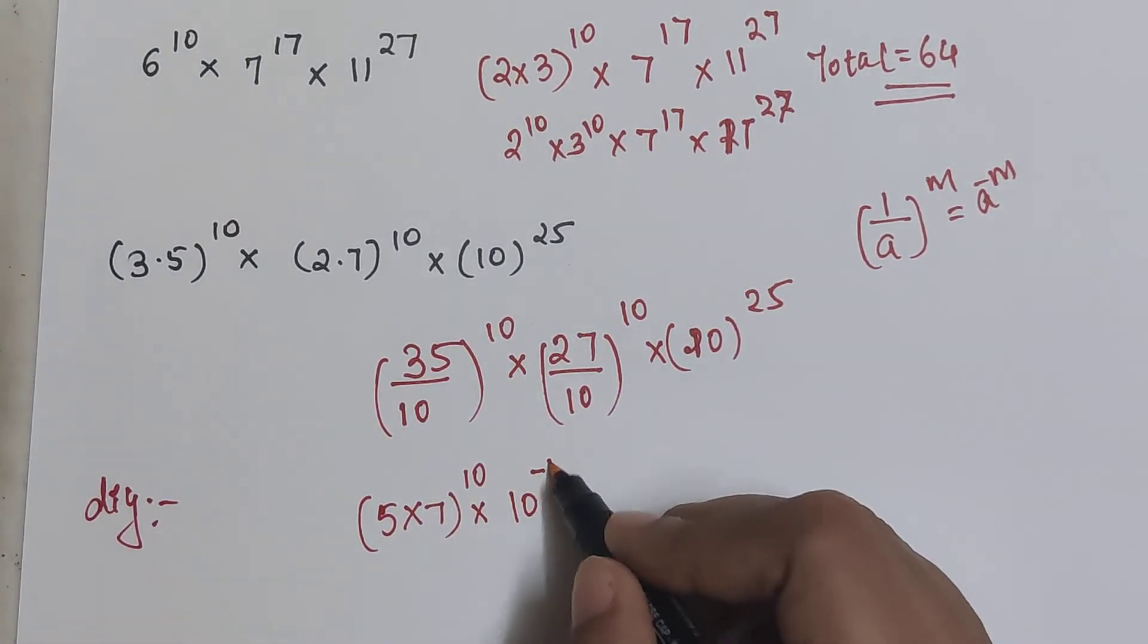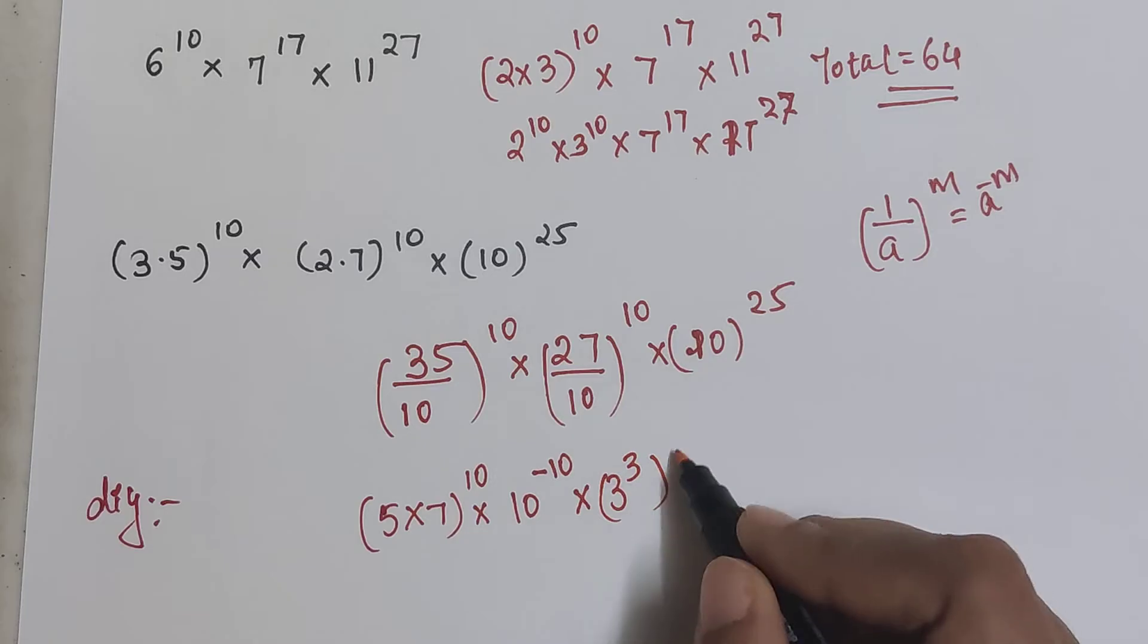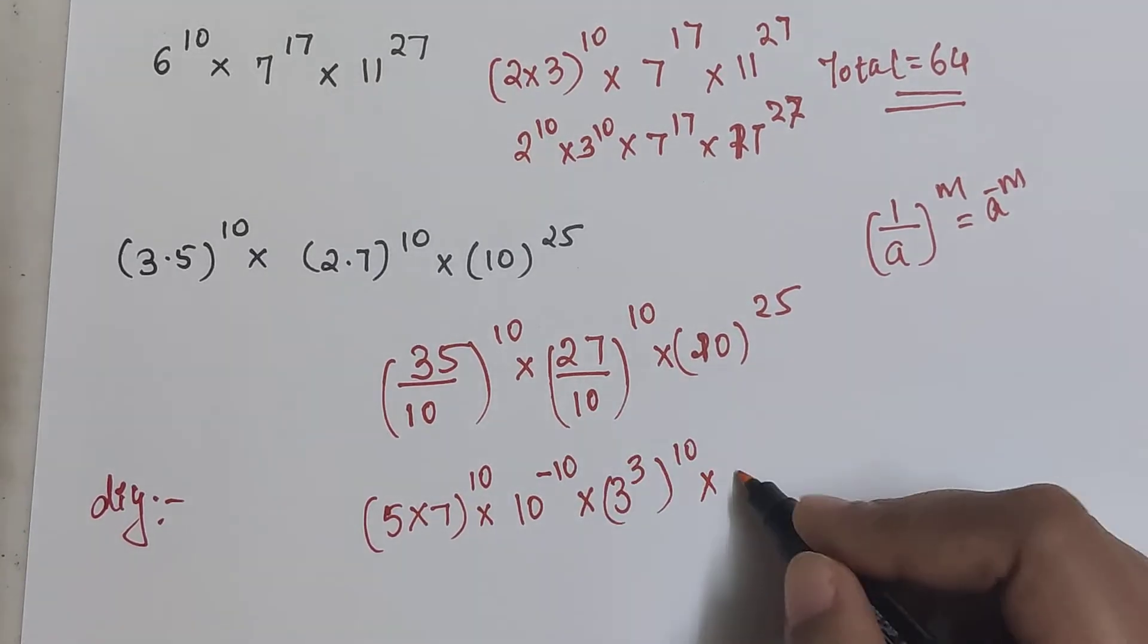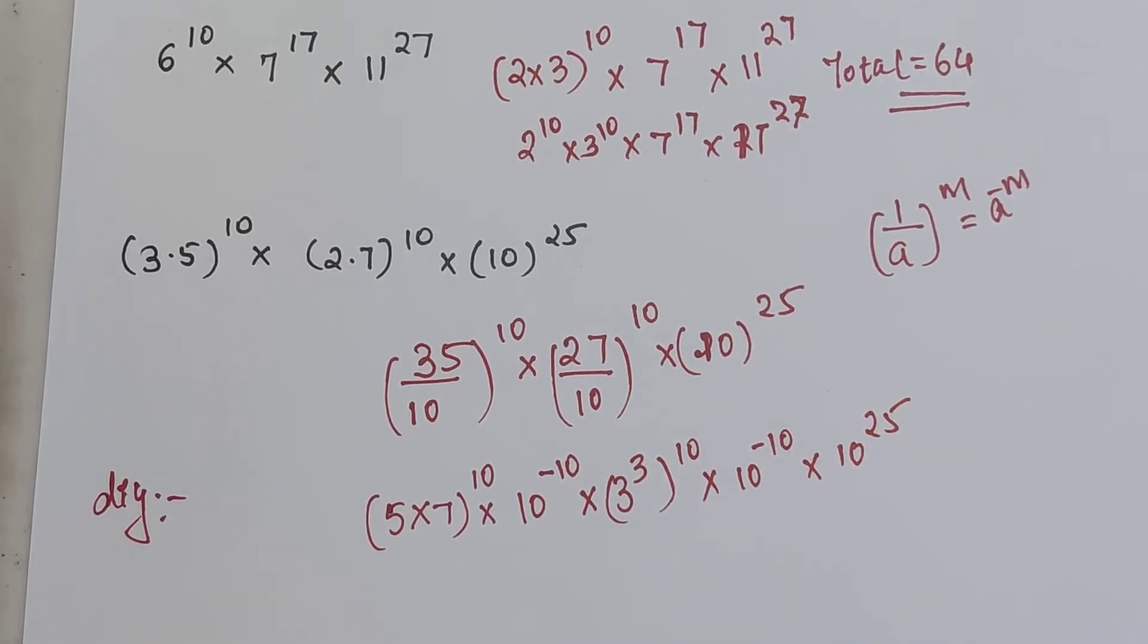So we can write this as nothing but 10 raised to minus 10. This is 2.7, which is nothing but 27 is 3 cube the whole raised to 10. Again this 10 can be written as 10 raised to minus 10, and this is 10 raised to 25.